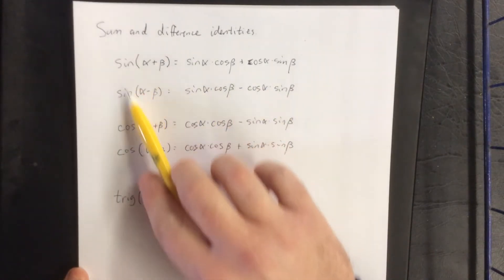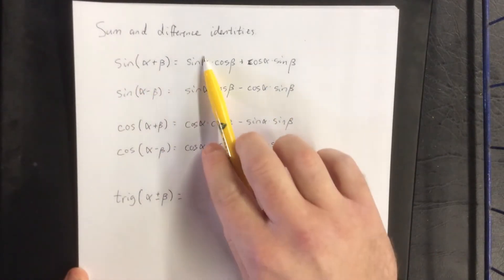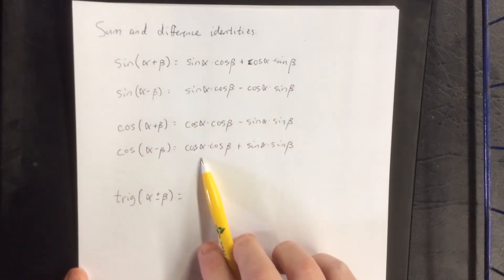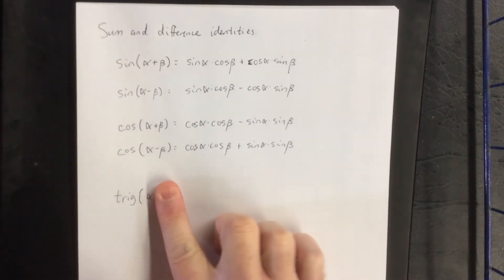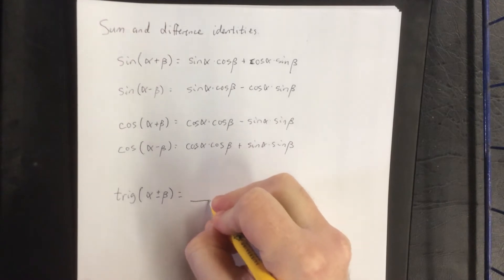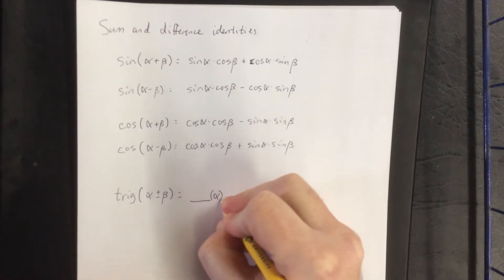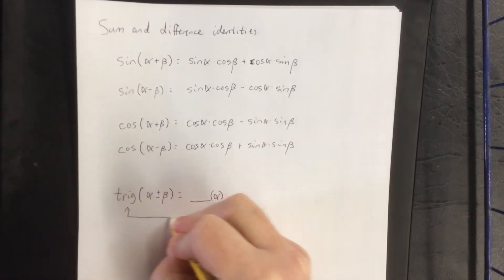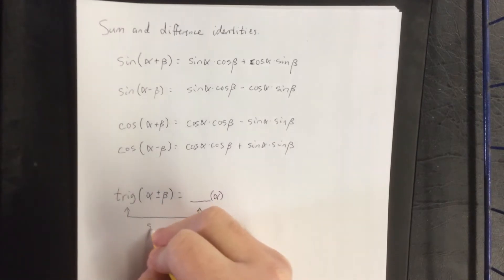For the sine of a sum or a difference, the first thing we see is sine. And for the cosine of a sum or difference, the first thing we see is cosine. So we're going to remember that as: the first thing you're going to see is just cover up the angle beta and recopy whatever that is — so blank of alpha, where this will be the same thing.